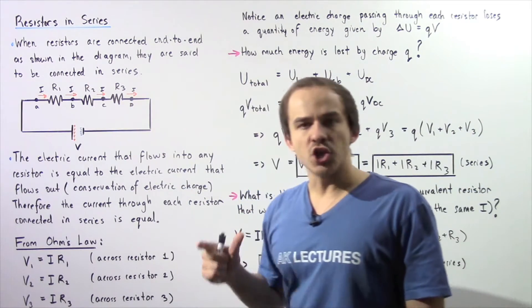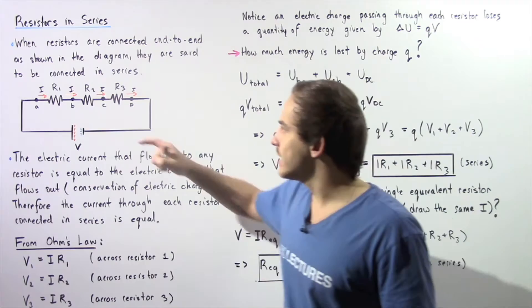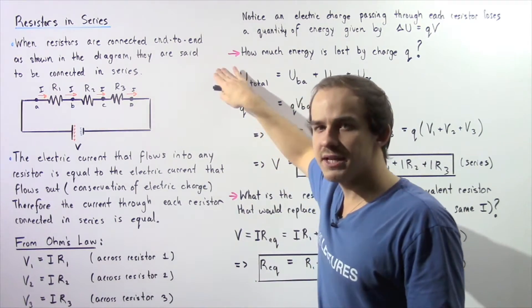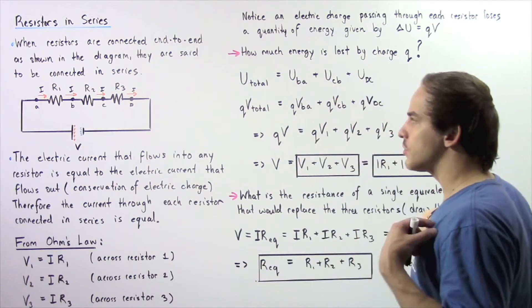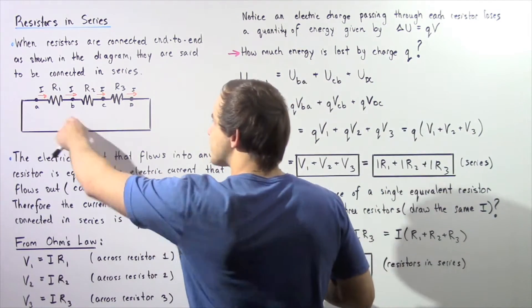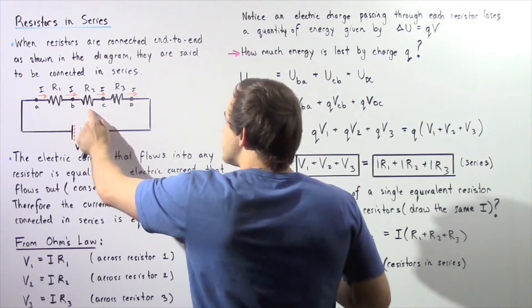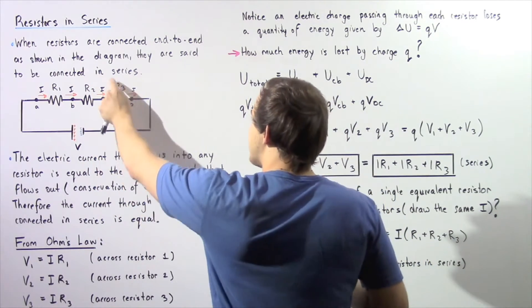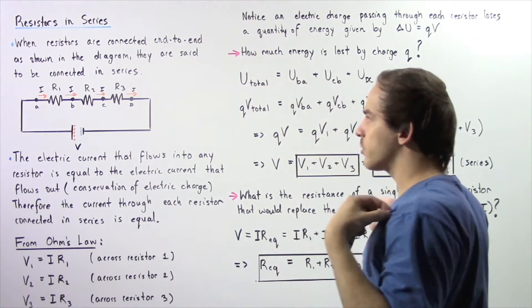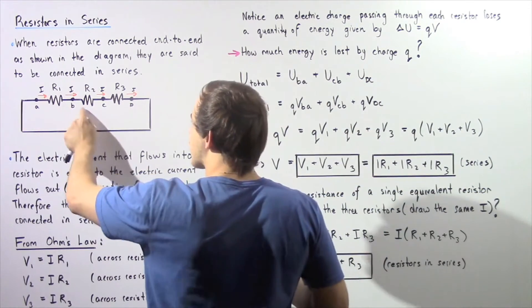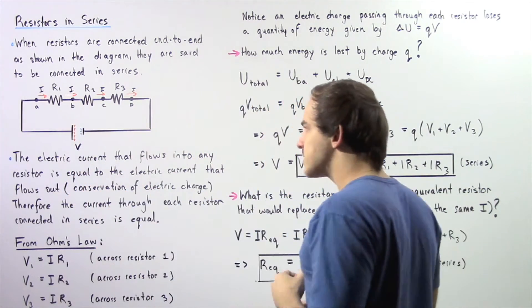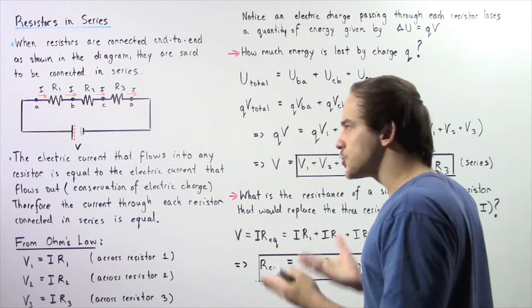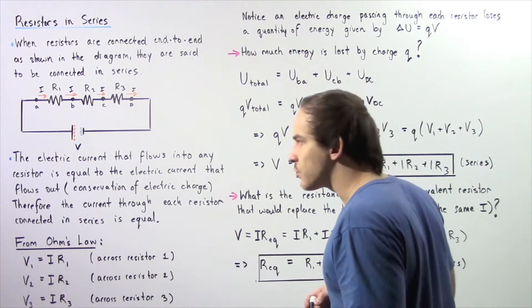When resistors are connected end to end, as shown in the following diagram, they are said to be connected in series with respect to one another. Resistor 1 has a resistance of R1, resistor 2 has a resistance of R2, and resistor 3 has resistance given by R3. This is our symbol for a resistor. Now these three resistors are essentially placed into an electric circuit which contains a battery.